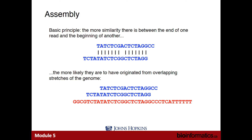The basic principle behind assembly is that we compare reads to each other to look for similarity between pairs of reads. The more similar two reads are, the more likely they are to have come from the same position on your input genome. Here's an example of two reads where the start of one read matches the end of another — these are overlapping reads. An overlap is where the end of one read matches the beginning of another read.